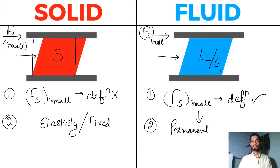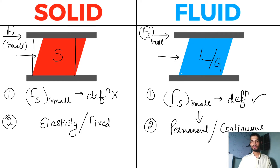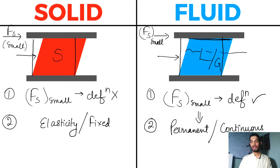If I apply some force, this liquid will not come back to its original position again. So we have this permanent deformation, and second, this deformation is also of continuous nature. If I apply some shear force and it deforms, it will deform continuously and permanently — it won't come back to its original position. Let's say this is the liquid level here; if I apply force the level will drop down, and if I apply the shear force again, the level goes down further.